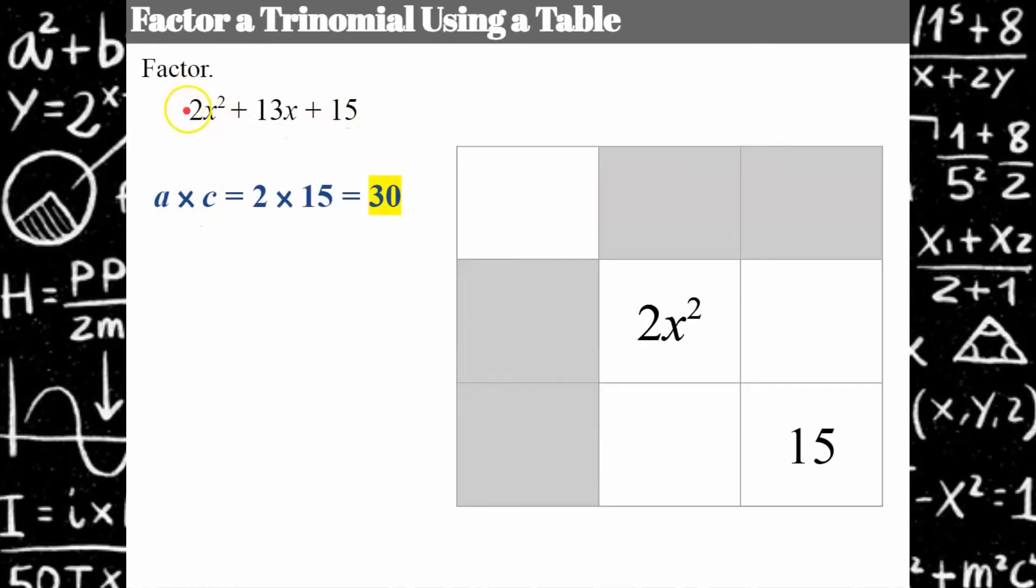The next step is I want to know a times c. The product of the coefficient a and the constant c is 30. 2 times 15 is 30. We know that when factoring a trinomial, the factors of 30 that when multiplied give you 30 and when added give you 13 make up your binomial factors. If the sum is 3 + 10 = 13, those are my x terms.